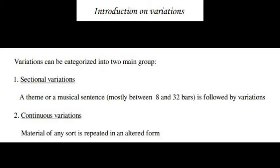Variations can be categorized into two main groups. First, sectional variations meaning a theme or a musical sentence mostly between 8 and 32 bars is followed by variations. Secondly, continuous variations meaning material of any sort is repeated in an altered form.